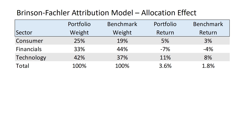I'm going to walk you through an example. I've got a portfolio that only allocates to three different sectors: consumers, financials, and technology. These are my portfolio weights — you can see they sum to 100%. The benchmark also invests in those three sectors only, and the weights sum to 100%.